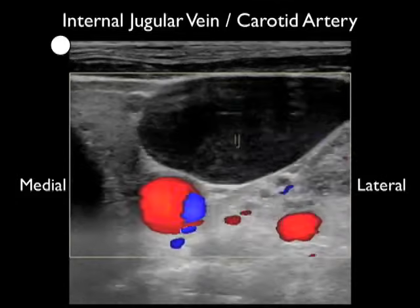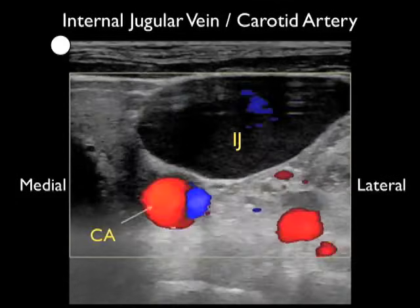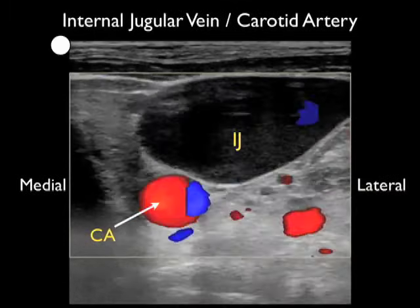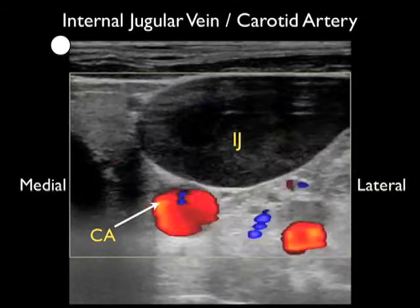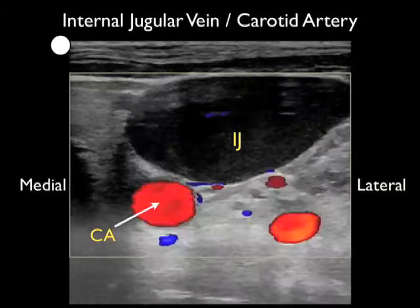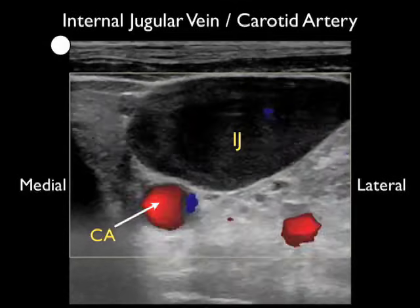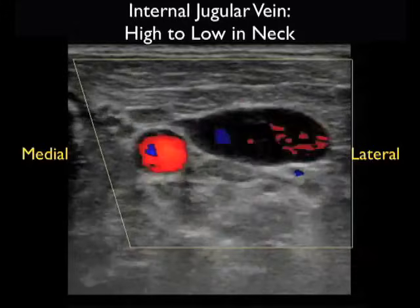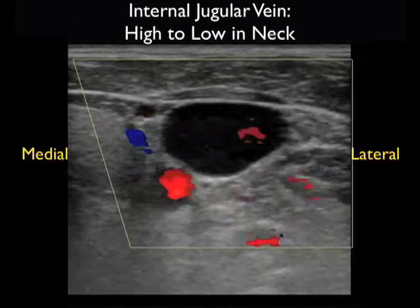Here's another video clip showing the internal jugular vein and carotid artery in a short axis configuration. Notice this internal jugular vein is much more distended than in the last patient. We see that the internal jugular vein is located more superficially at about 0.5 centimeters, and that it overlaps the carotid artery medially, highlighting the great variability in the course of the internal jugular vein in relation to the carotid artery.